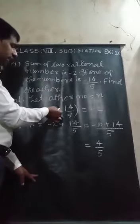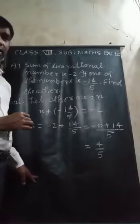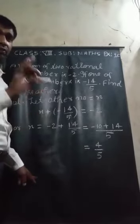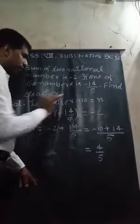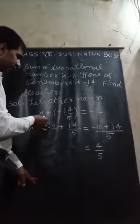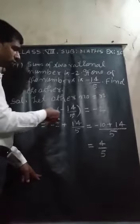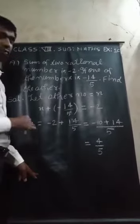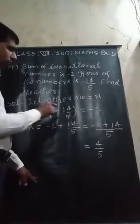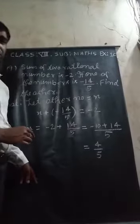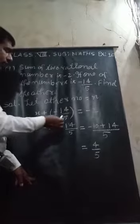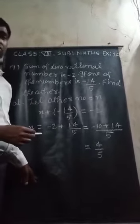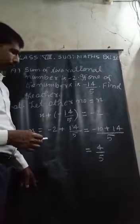x plus minus 14 upon 5. That means minus 14 upon 5 will be added to x equal to minus 2. Then x equal to minus 14 upon 5 will go toward the minus 2. Then symbol will be changed.